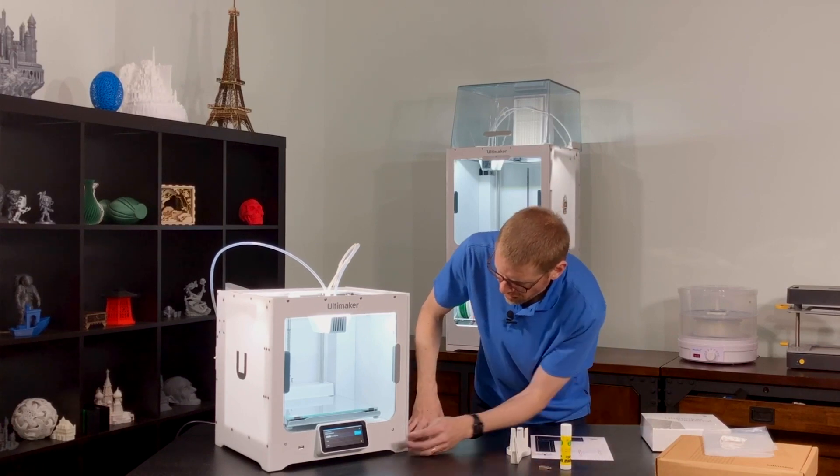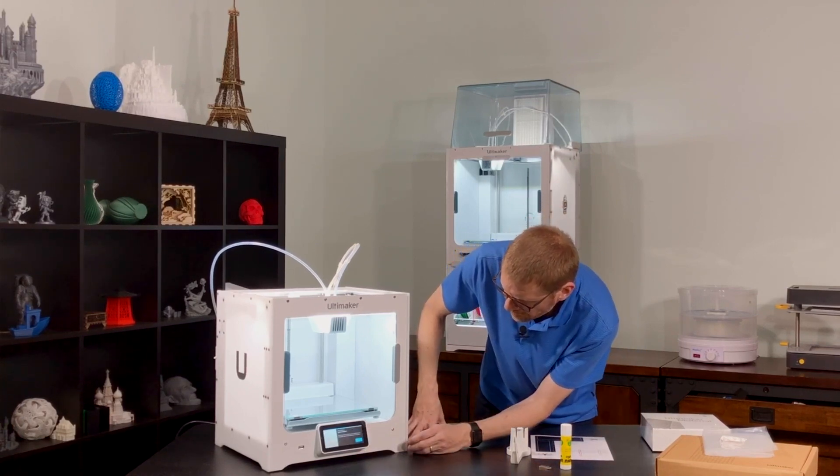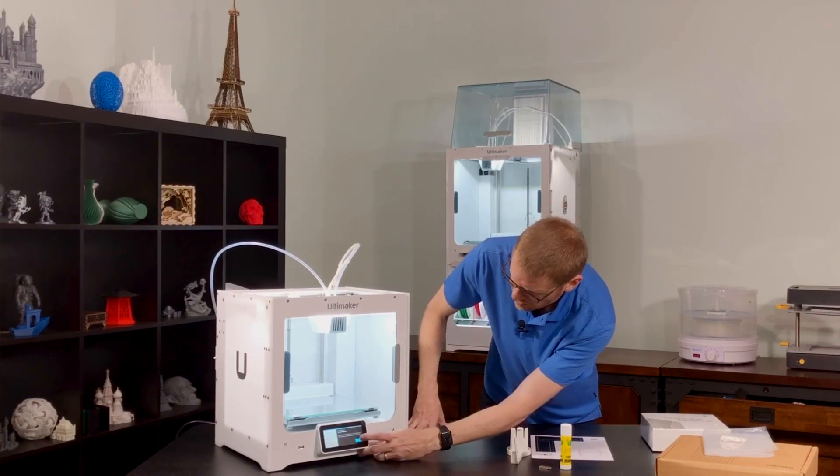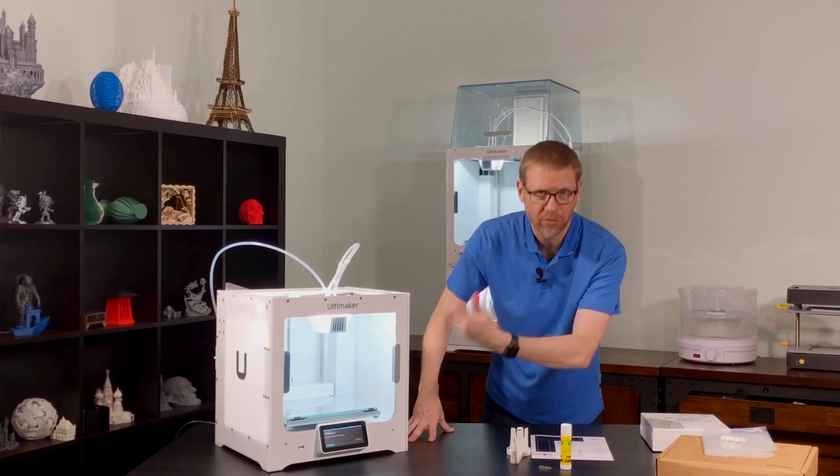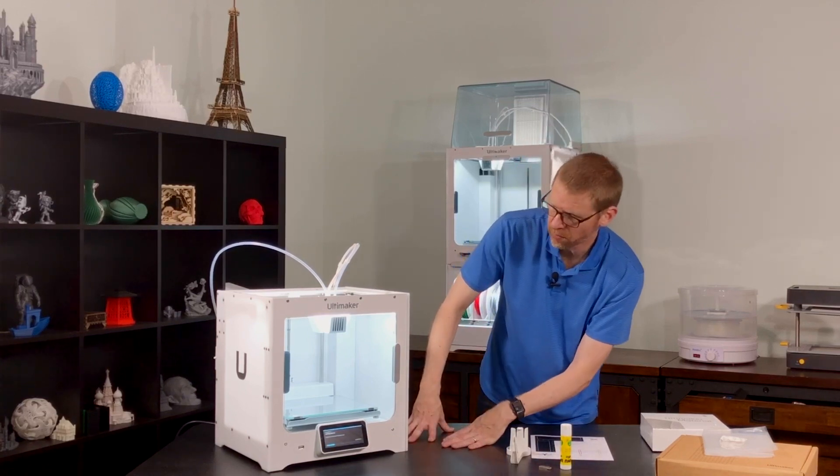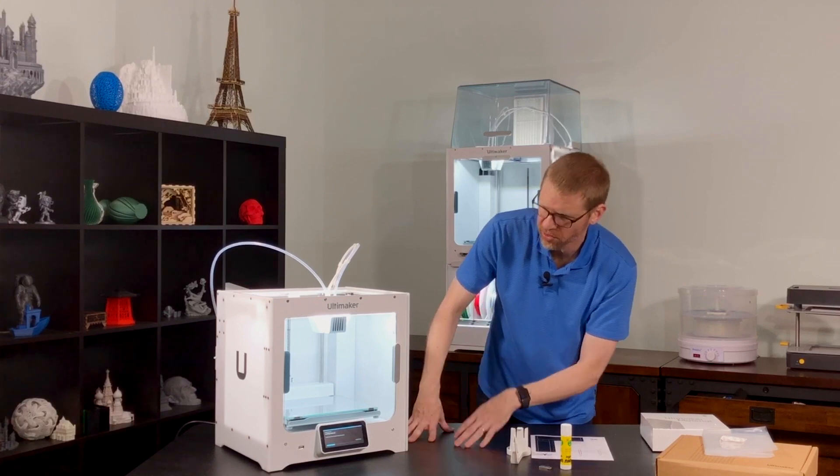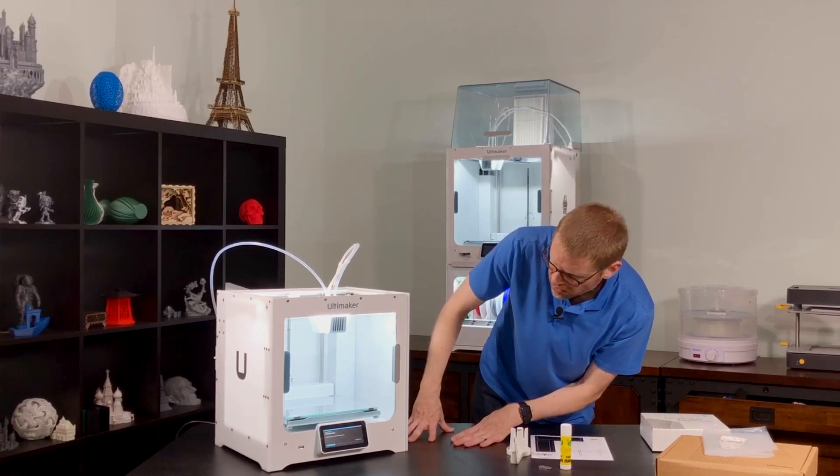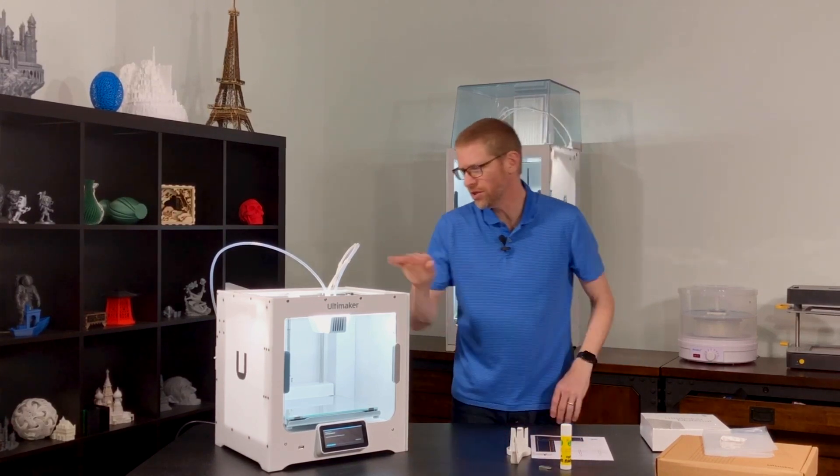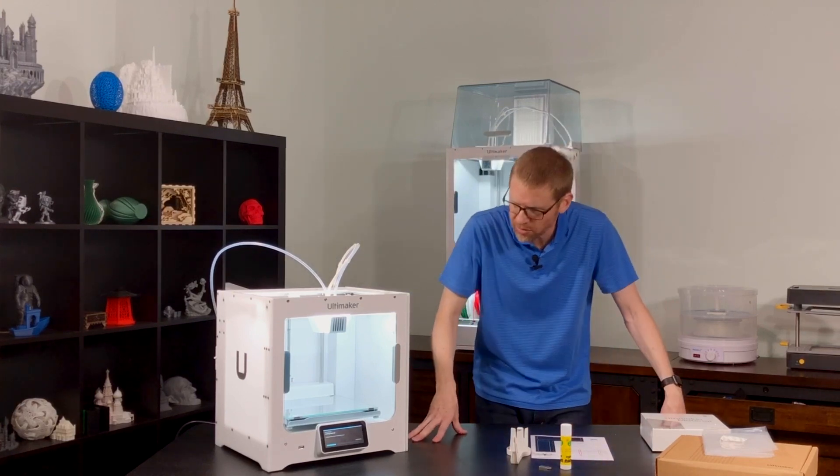Insert material. And it detects it as PVA natural, so confirm. Insert material. I've already done that, so confirm. Now you could just follow through these steps and go step by step as it says. As I showed you, I like to do that little time-saving procedure. It's now loading the material, so it's heating up the print core, and it's going to feed that material through for us.